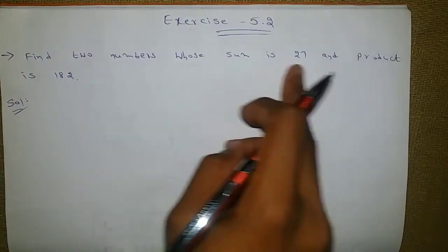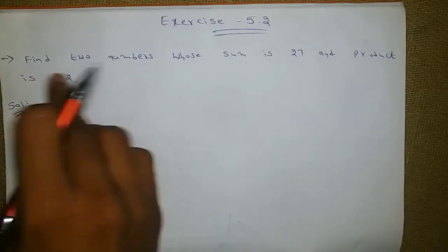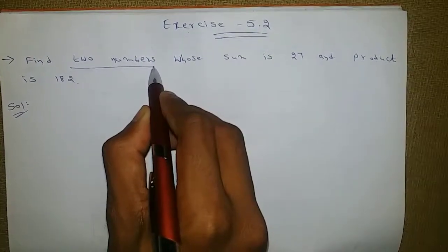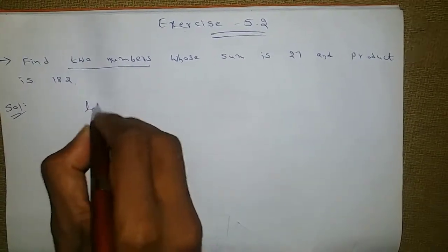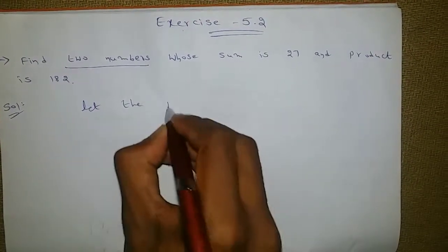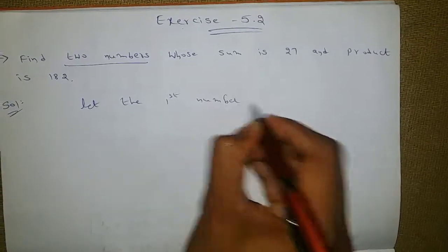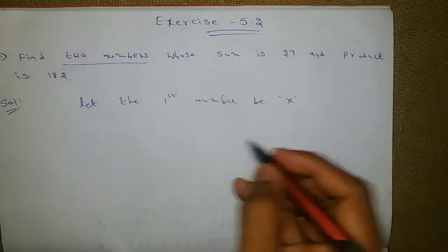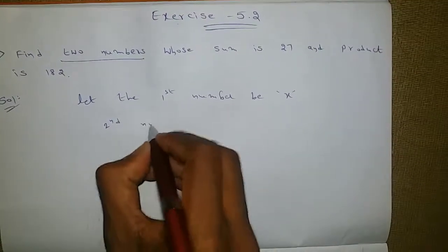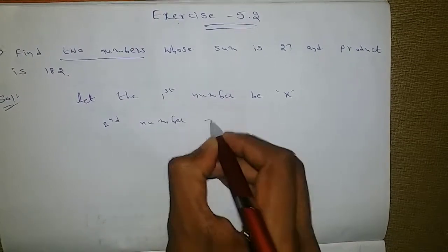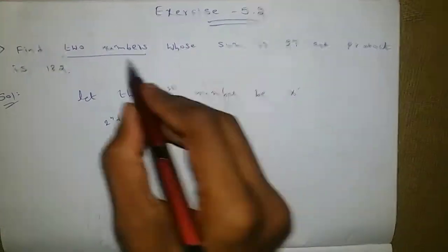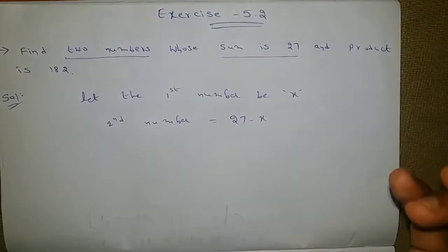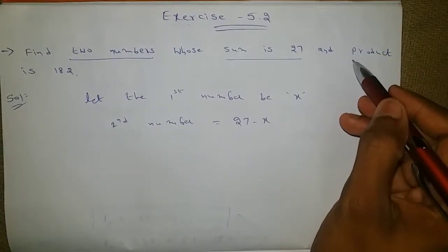The question is: find two numbers whose sum is 27 and product is 182. We don't know those two numbers, so let the first number be x. If the first number is x and the sum is 27, then the second number will be 27 minus x.